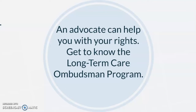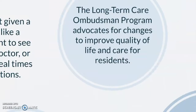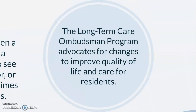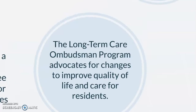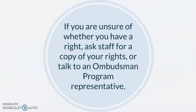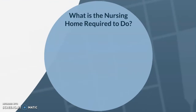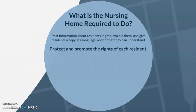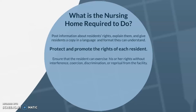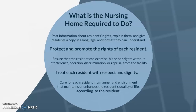An advocate can help you with your rights. Get to know the Long-Term Care Ombudsman Program, which advocates for changes to improve quality of life and care for residents. If you are unsure of whether you have a right, you can ask staff or an Ombudsman Program Representative. The nursing home is required to post information about residents' rights and explain them, protect and promote the rights of each resident, ensure residents can exercise their rights without interference or retaliation, treat each resident with respect and dignity, and care for each resident in a way that maintains or enhances quality of life.